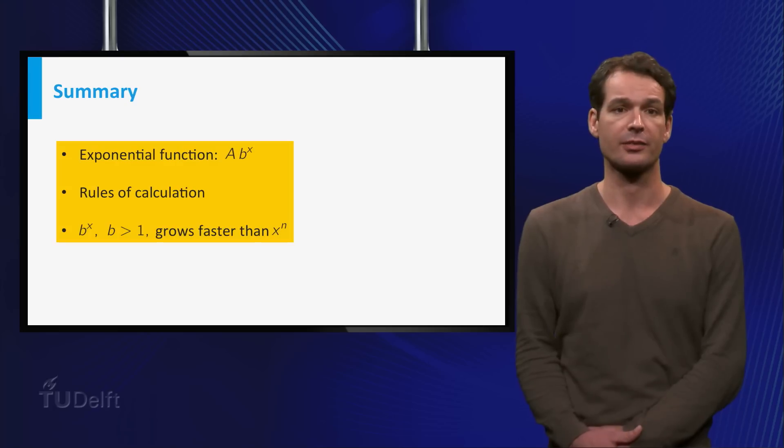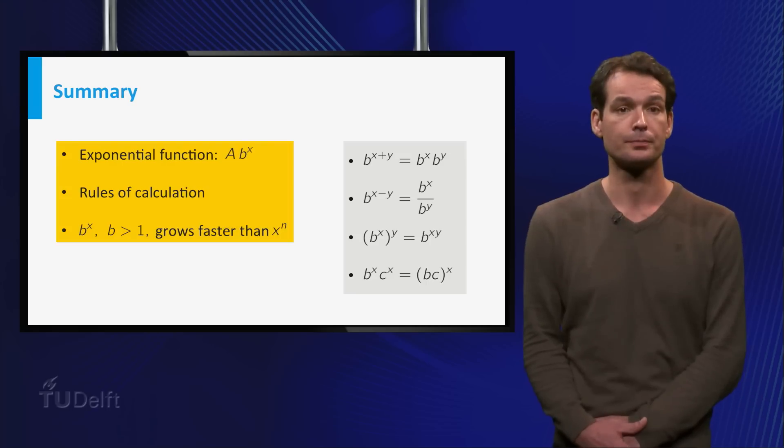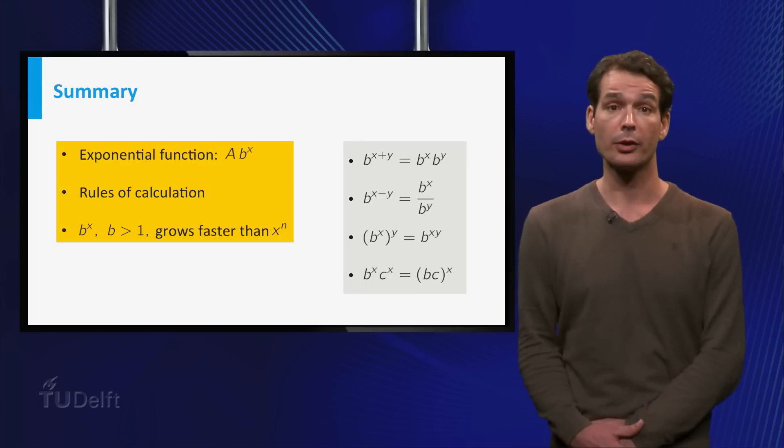Now, let's summarize. An exponential function is of the form a times b to the power x. We have the rules of calculation for exponential functions. And an exponential function with b greater than 1 grows faster than any polynomial. You will see that exponential functions occur in many different applications. In the exercises, for instance, you will model interest rates and population growth with exponential functions.